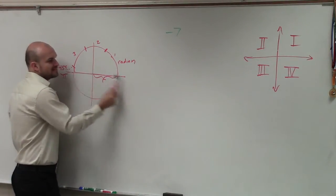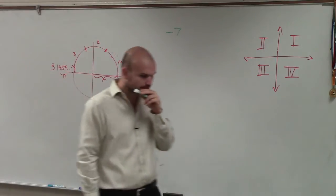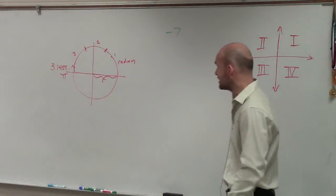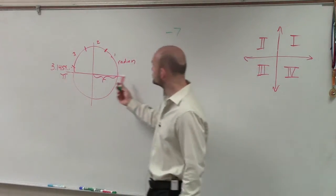Our terminal side is always going to be starting on the x-axis, in the positive side of the x-axis. Now, we talked about the definition of a radian.